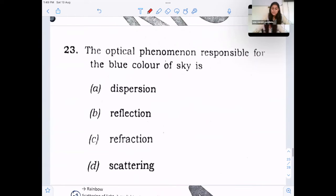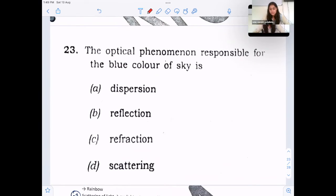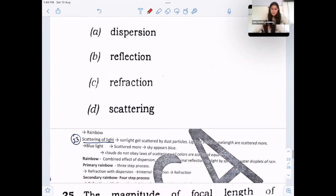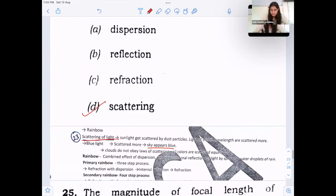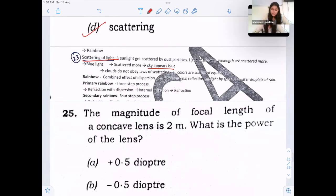Next, the optical phenomena responsible for blue colour of the sky is, sky appears blue, this is due to scattering of light, light of shorter wavelength is scattered more. So option D, blue colour of the sky is due to scattering.